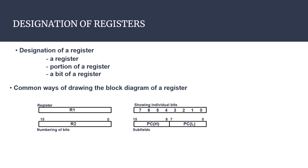If we want to represent a portion of bits of a register — called sub-fields — we use parentheses with H for high-order bits and L for low-order bits. For example, if the register name is PC, then PC(H) indicates the high-order bits. For a 16-bit register, bits 8 to 15 are the high-order bits, and bits 0 to 7 are the low-order bits.